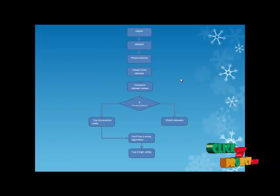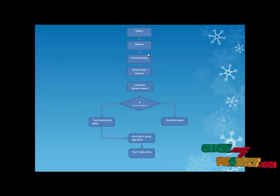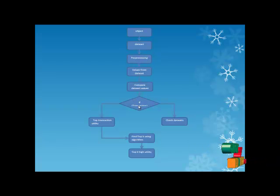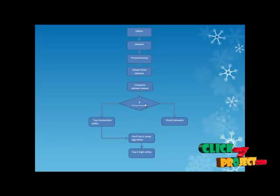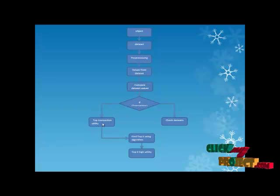This is our project flowchart. First, we insert our dataset. Then the dataset goes through a pre-processing step, where unwanted data is removed and values are separated. The values are then compared to related items in the dataset. After that, the transaction utility is checked, and if the process is finished, the top transaction utility is selected.